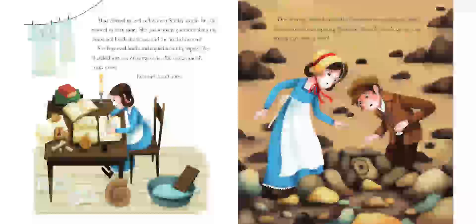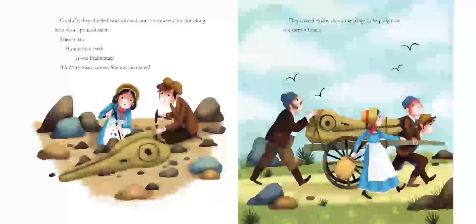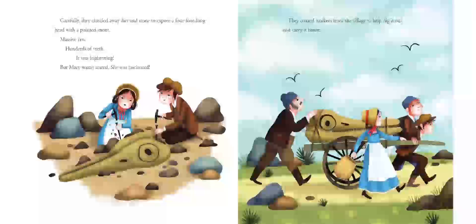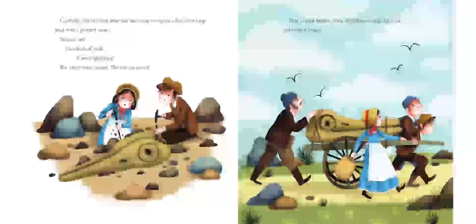One morning when Mary and her brother were exploring the cliffs, they saw something surprising. Nestled in the rock was a large eye socket looking right back at them. Carefully, they chiseled away dirt and stone to expose a four-foot-long head with a pointed snout, massive jaw, hundreds of teeth. It was frightening, but Mary wasn't scared. She was fascinated.